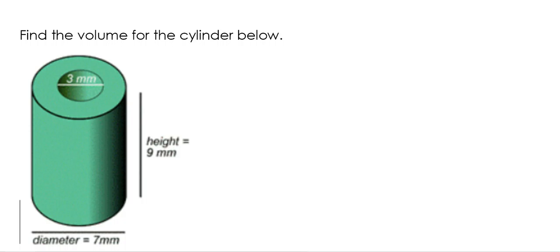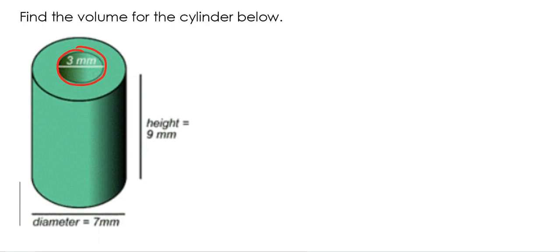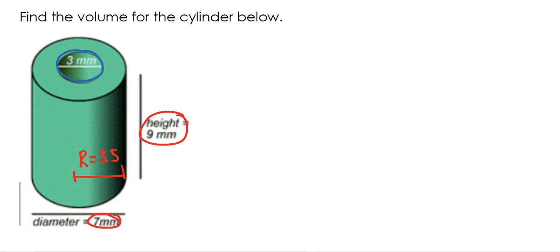In this example, I want to calculate the volume of this green cylinder, but one small problem is that we have this hole in the middle. I want to calculate the volume of a cylinder with a hole in the middle. The height of my cylinder is 9mm, the diameter is 7mm, so the radius of the bigger cylinder is 3.5mm. The small circle in the middle has a diameter of 3mm, so the radius — I'll use little r — is 1.5mm.